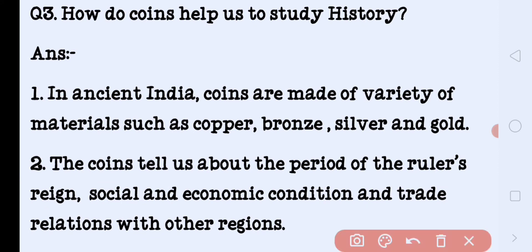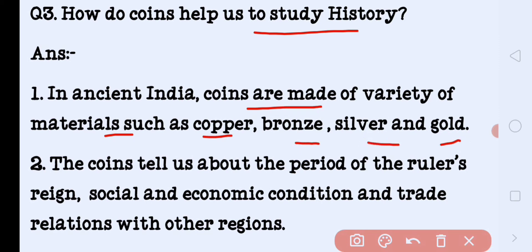How do coins help us to study history? In ancient India, coins were made of a variety of materials such as copper, bronze, silver and gold. Coins tell us about the period of the rulers' reign — us ruler ne kab shasan kiya. They also reveal the social and economic conditions and trade relations with other regions — kis-kis country ke saath business karte the.